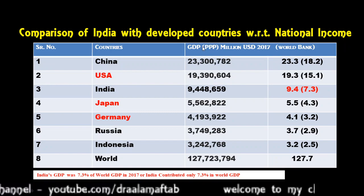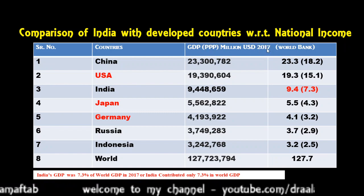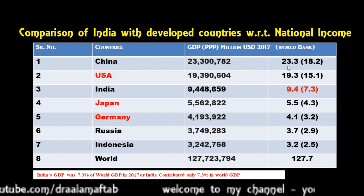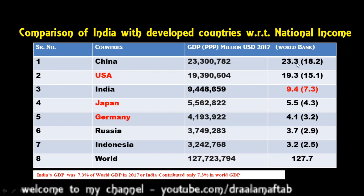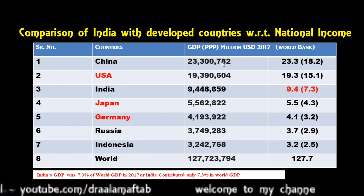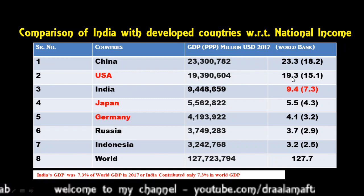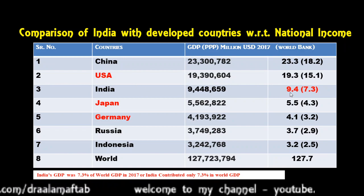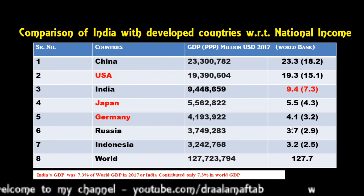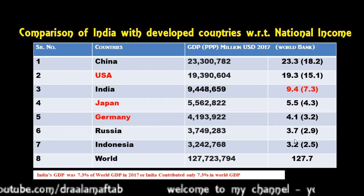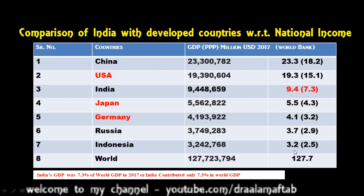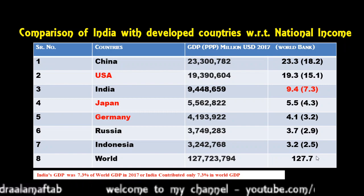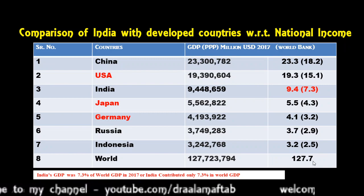In terms of purchasing power parity in the same year 2017, World Bank data says China's economy size was 23.3 trillion dollar, whereas USA was 19.3 trillion dollar, India 9.4 trillion, Japan 5.5 trillion, Germany 4.1 trillion, Russia 3.7 trillion, Indonesia 3.2 trillion, and the world economy on PPP term was 127.7 trillion dollar.